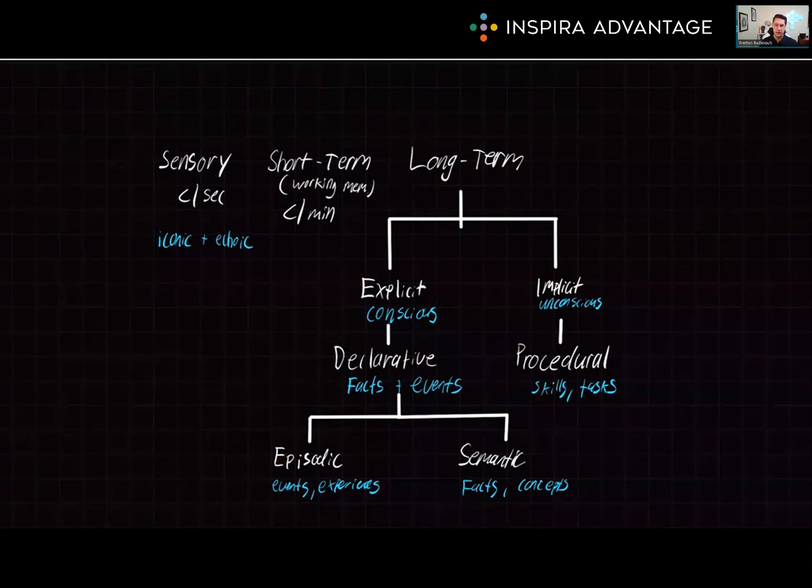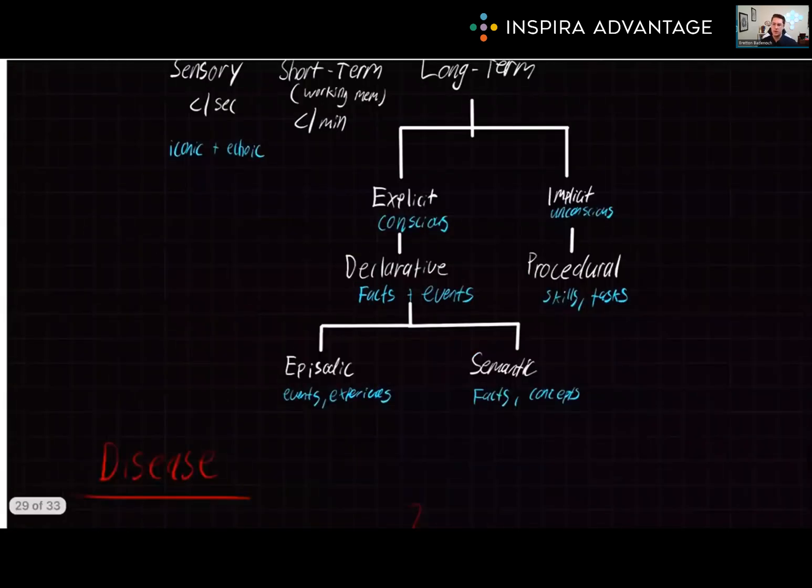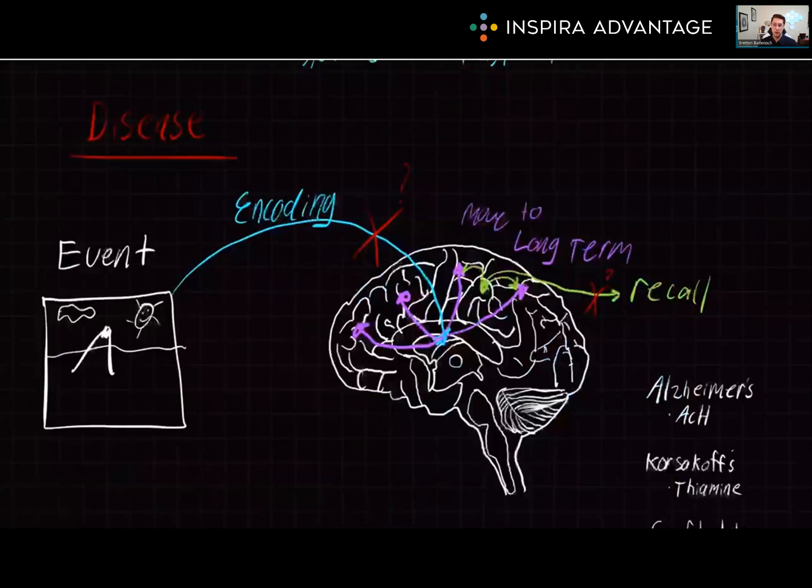Now let's move on to disease that can affect memory. Alzheimer's disease is a degenerative brain disorder linked to a loss of acetylcholine in neurons that link to the hippocampus. It causes dementia and memory loss. Korsakoff syndrome is another disease that can cause memory loss. It's caused by a thiamine deficiency in the brain and causes retrograde amnesia as well as anterograde amnesia. Another symptom is called confabulation. This is the fabrication of vivid but fake memories.